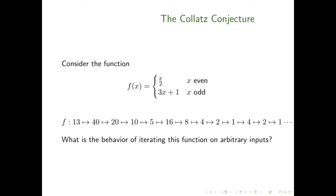As far as we've been able to tell, whenever we iteratively apply this function to a positive integer input, it will eventually get down to 1 and get caught in the loop 4, 2, 1, and so on. But we haven't been able to prove this — we haven't been able to prove that there aren't numbers that would cause this series to go off to infinity or get stuck in a different loop.